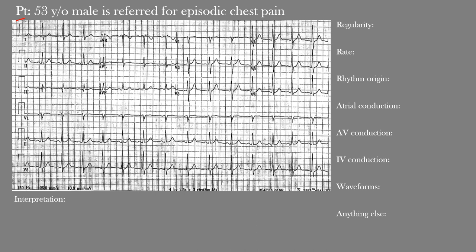First we have regularity — are we dealing with a regular or irregular rhythm, and if irregular, is it regularly irregular or irregularly irregular? Next is heart rate. Then rhythm origin — where is the rhythm actually starting from within the heart? Then conduction aspects: atrial, AV, and intraventricular. Then waveforms including all waves, segments, and intervals. Finally, is there anything else we've missed? After that we make a final interpretation.